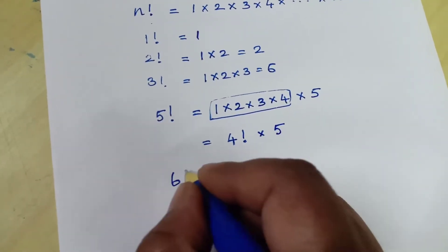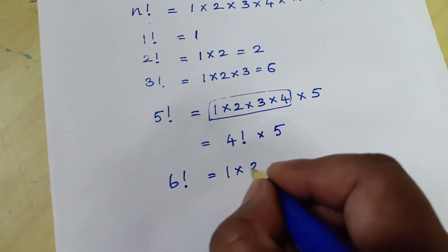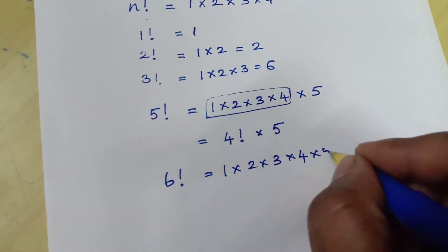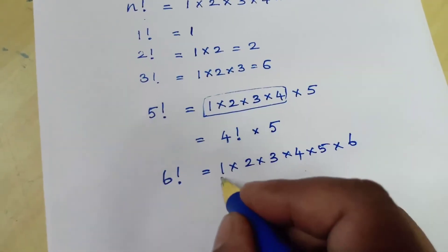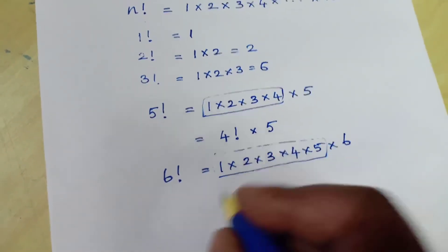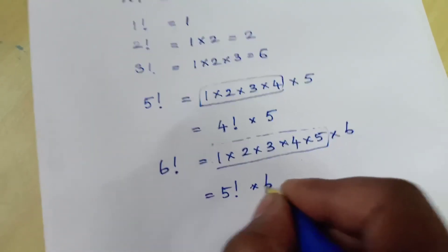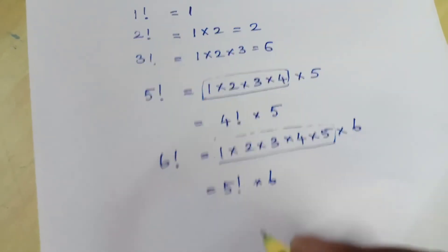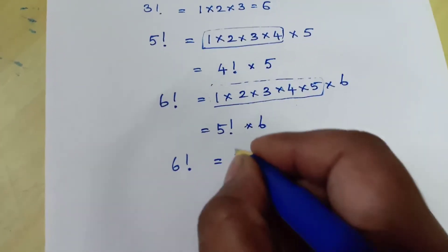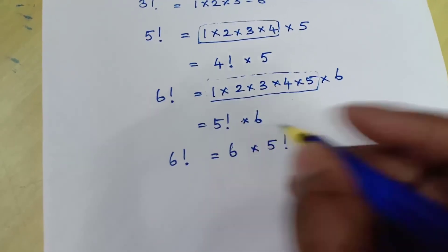Similarly, 6 factorial can be written as 1 × 2 × 3 × 4 × 5 × 6. The first 5 terms can be represented by 5 factorial. So 6 factorial can be written as 6 × 5 factorial. They are in the product — I have just interchanged the order.